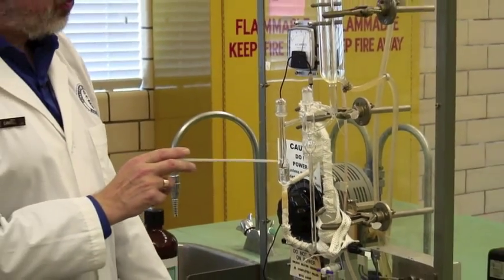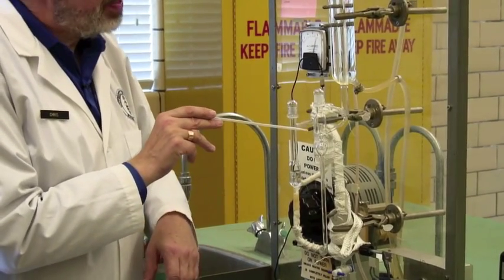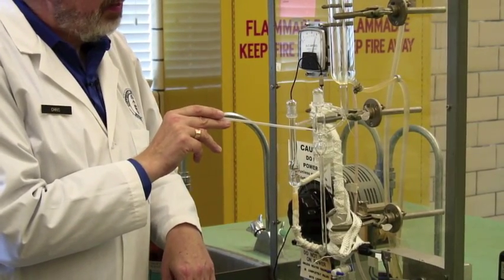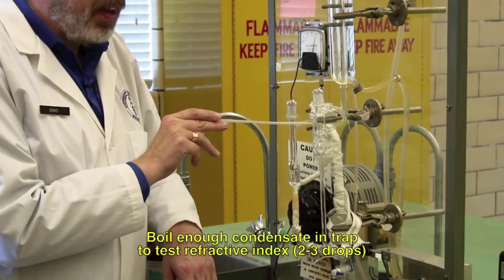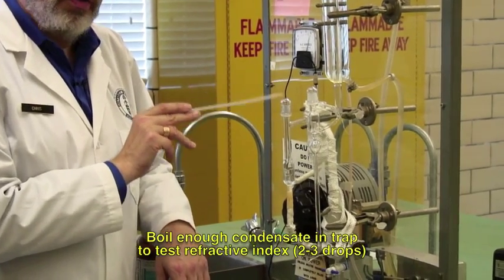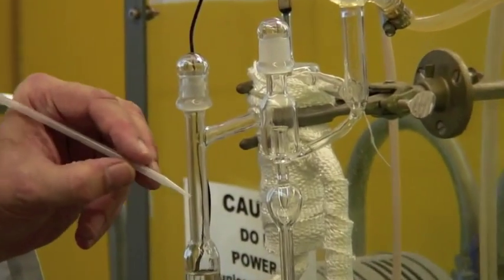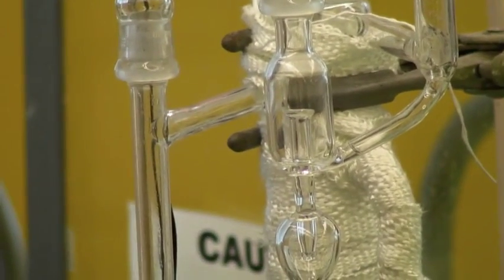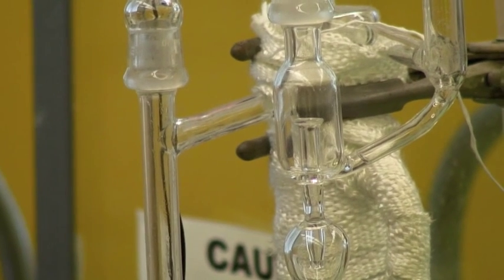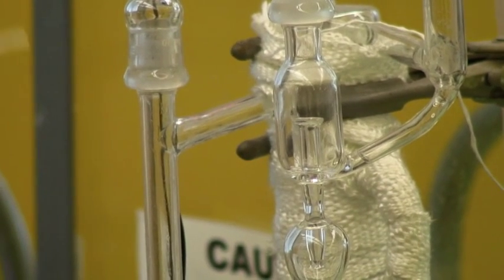We now need to wait. And the criterion is enough liquid in this, the vapor trap, to run a refractive index. So you need two or three drops. You need about that much in the bottom of the dropper. And once you've got that, then you are ready to move on.